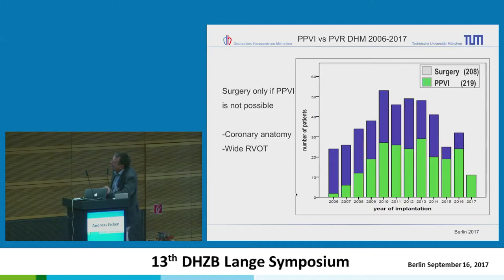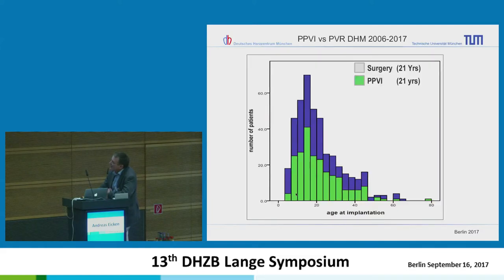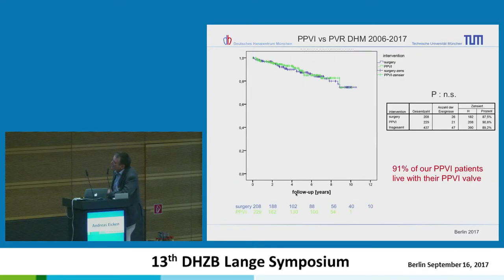In Munich we are lucky to have a really good infrastructure: three study nurses and Alfred Hager, who is very meticulous in following every patient, so our follow-up is nearly complete. At 10 years the two survival curves — surgical cohort and interventional cohort — are absolutely identical, achieving the same result.